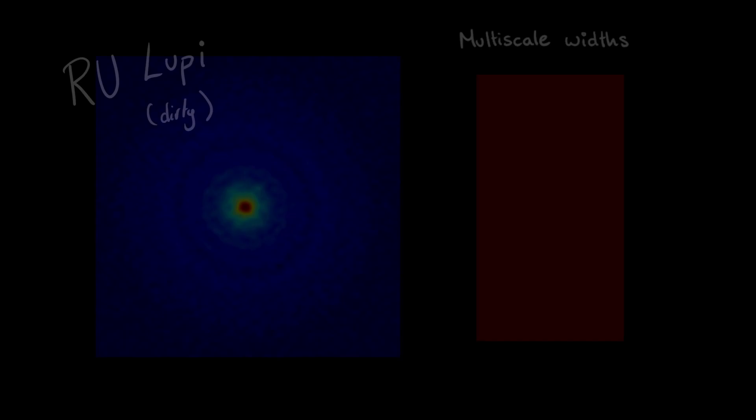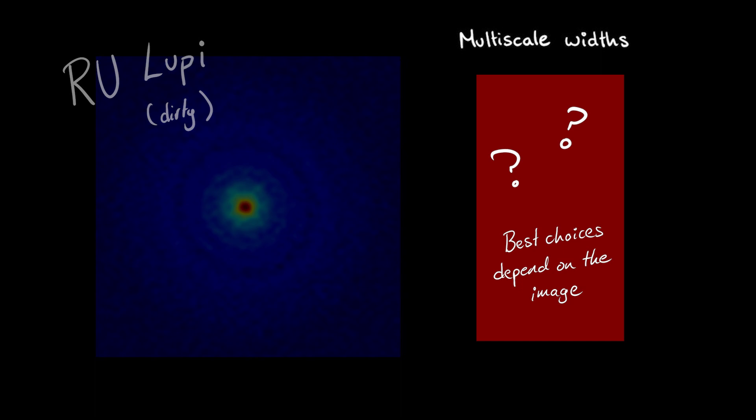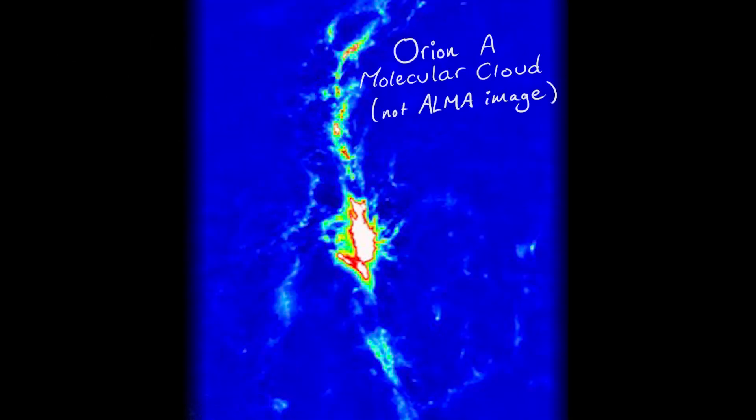For any particular dataset, however, the exact number and size scales will depend on the structure of the emission in the image. Here's another example showing a complex field that has structure at a wide variety of size scales. In cases like these, multi-scale cleaning converges much more quickly than standard cleaning, and produces smoother, more physical maps with fewer artifacts.